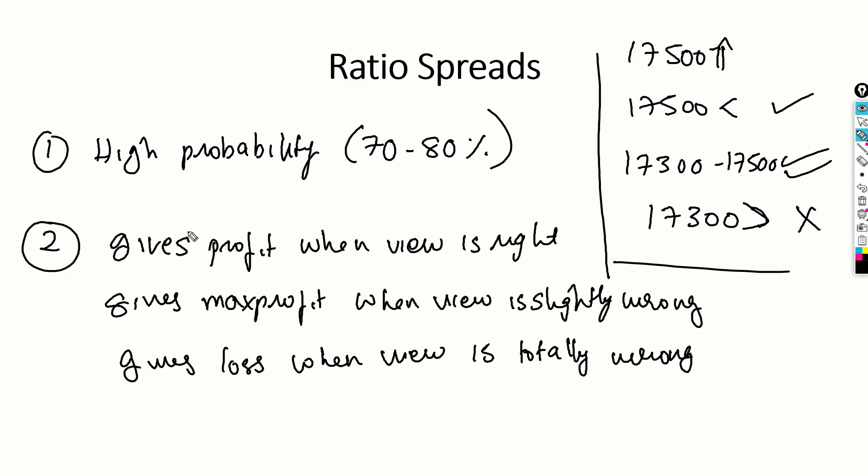To summarize: ratio spread gives profit when the view is right, gives maximum profit when the view is slightly wrong, and gives a loss only when the view is totally wrong. Our idea is not to generate huge returns through ratio spreads — we aim to generate anywhere between 0.5 to 1% using ratio spreads as a supplementary strategy alongside our main strategies like straddles or strangles.